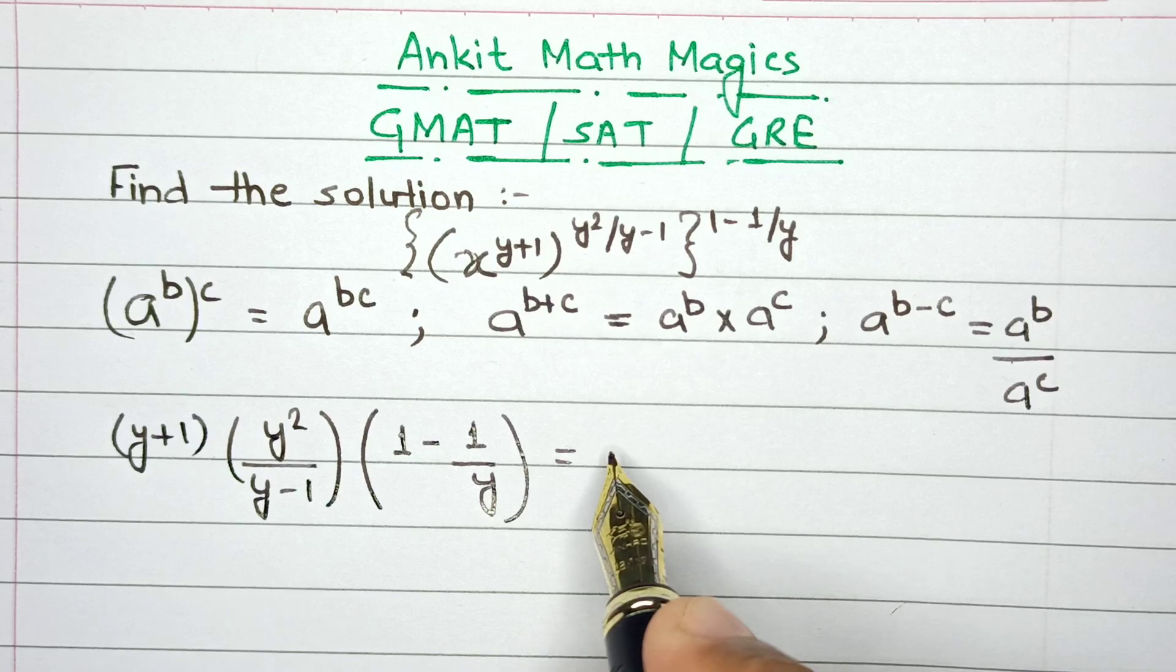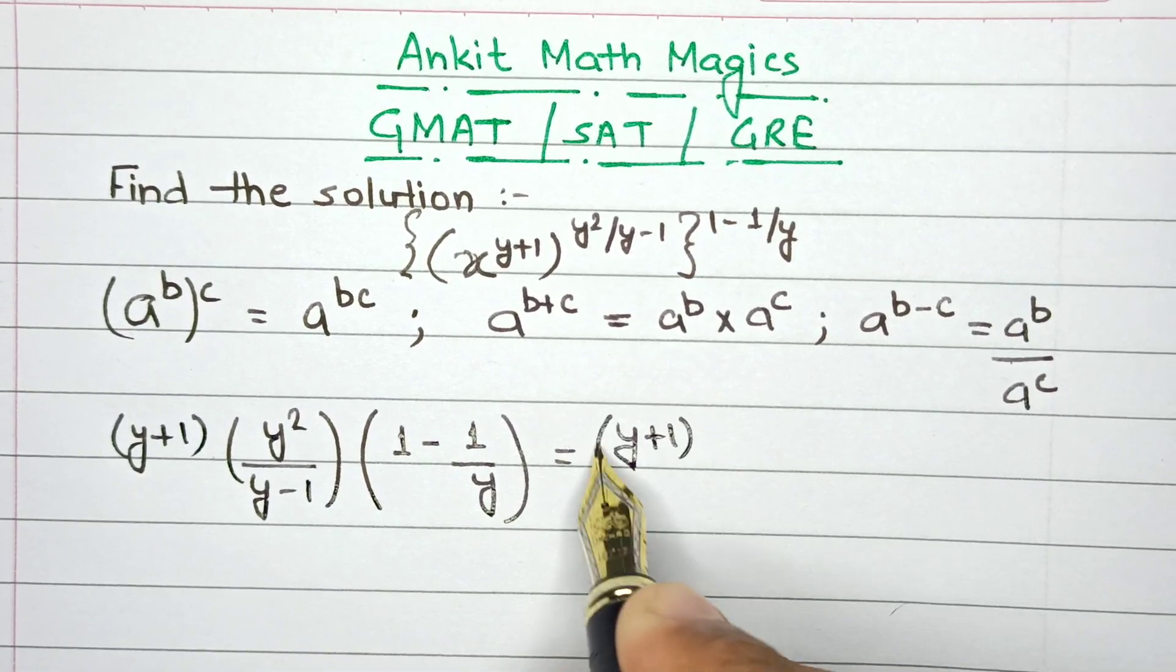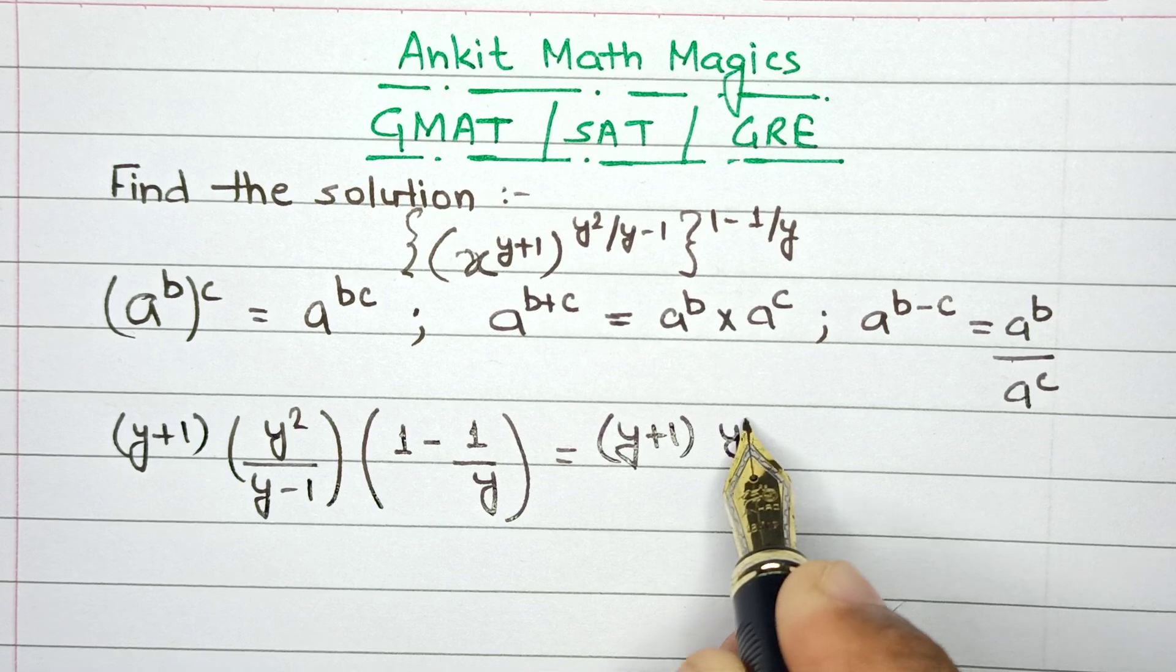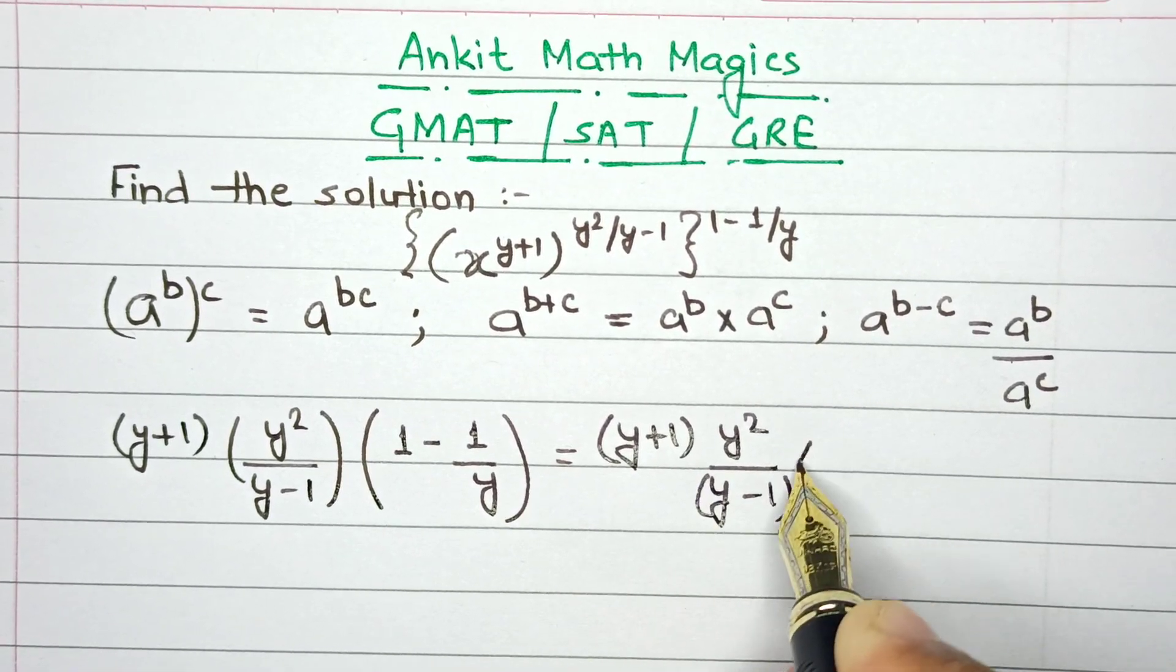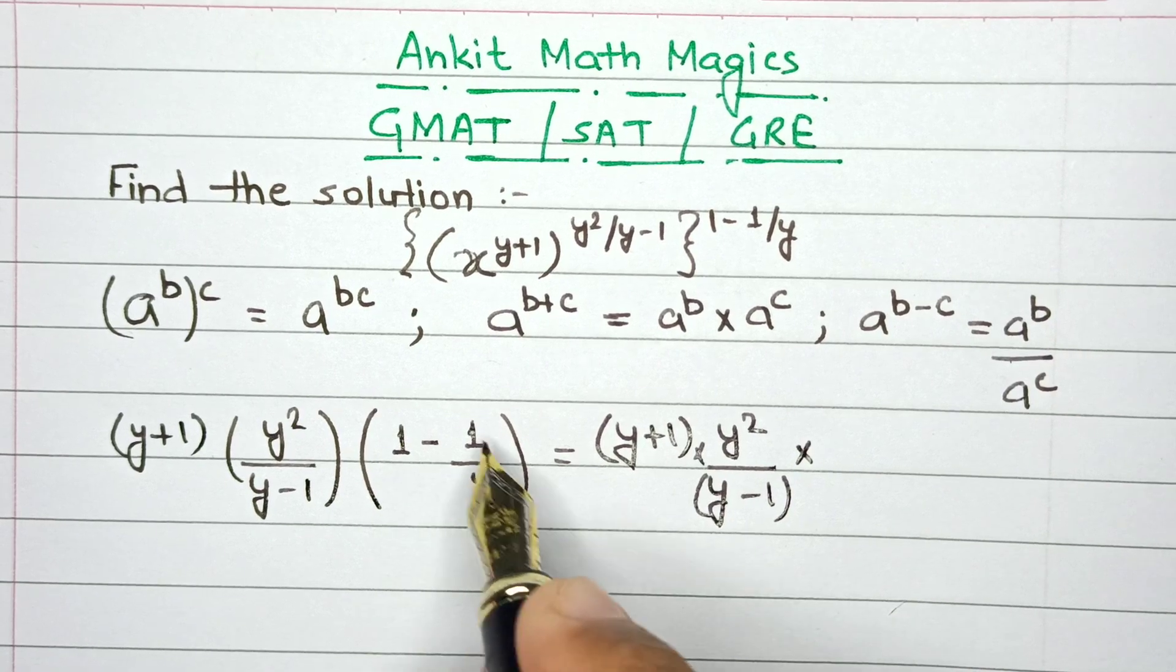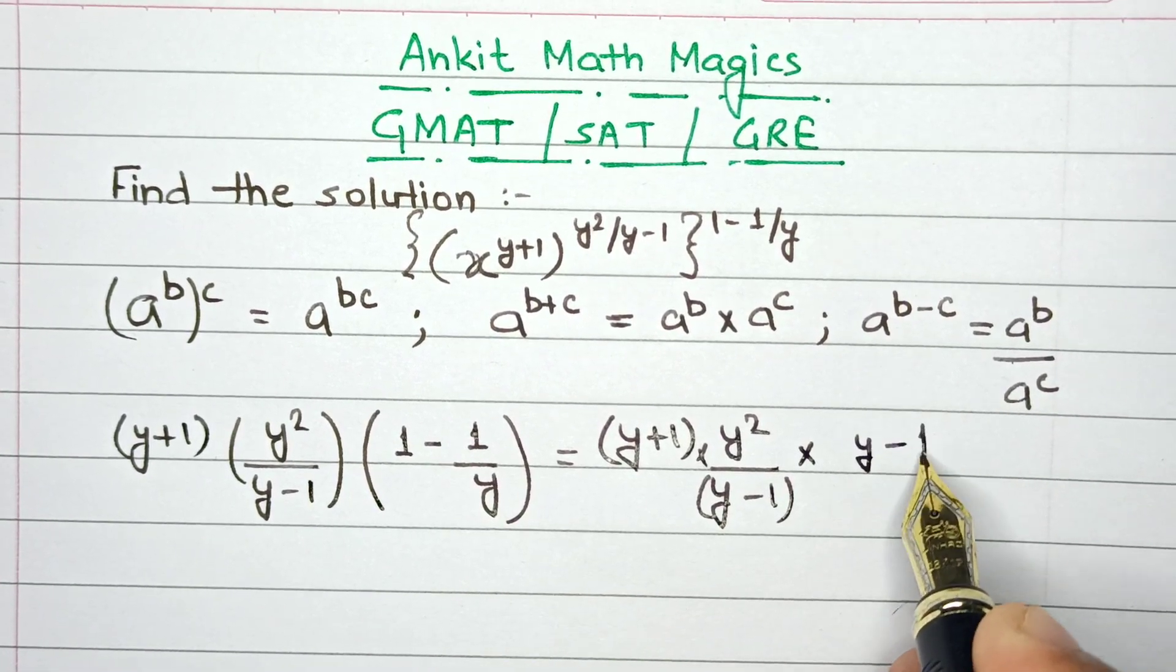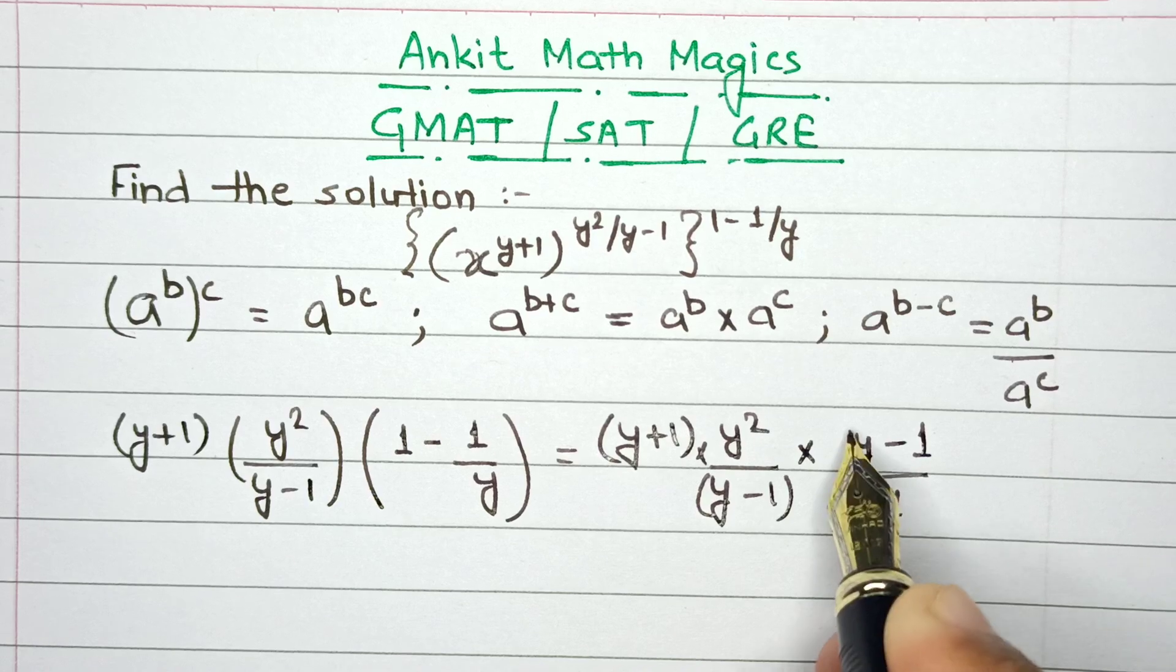Let's solve this. (y+1) remains intact. This part can be taken as (y²/(y-1)) multiplied by, when we take the LCM of this part, (y-1)/y.